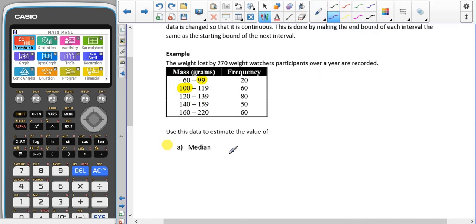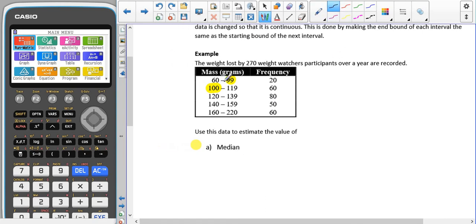So for this first interval, instead of going from 60 to 99, it needs to go to 99.5. The reason why we go up to 99.5 is because that's halfway between 99 and 100. The top end of this one here is going to go to 119.5, so this one here is also going to be 119.5. Same again for the 139 and the 140, they're both going to become 139.5, and the 159 and the 160 are both going to become 159.5.